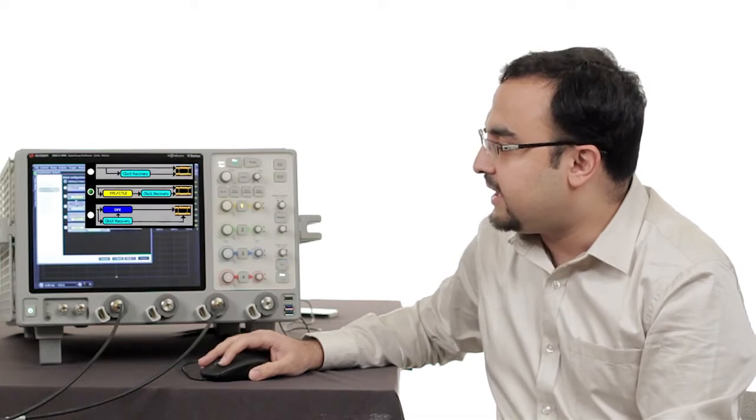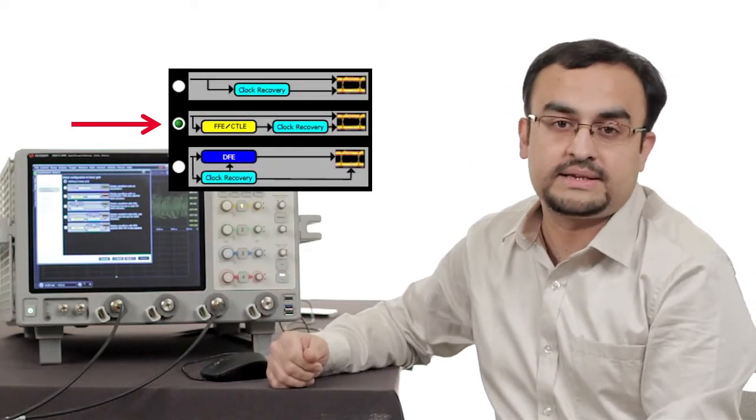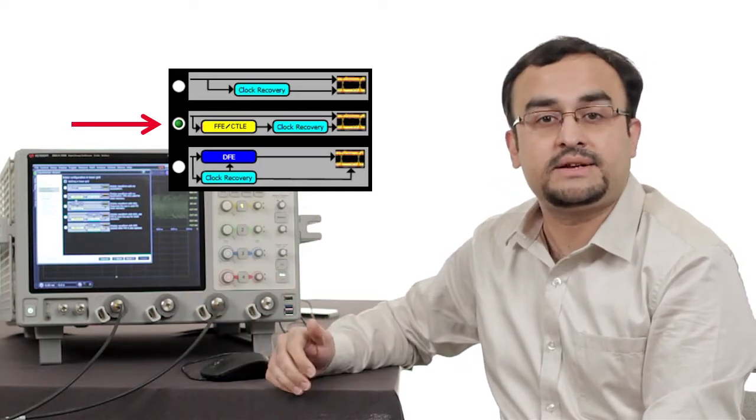So I say next and in the other setup I would also like to plot an eye which is without applying the equalizer. In this case the equalizer will only be used for clock data recovery and not applied onto the data.